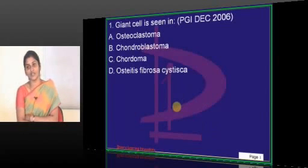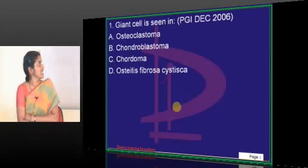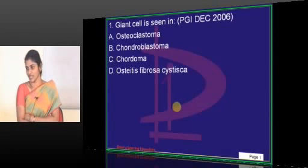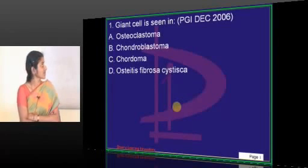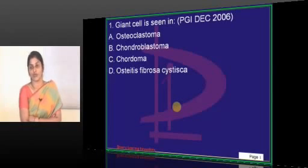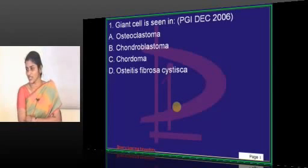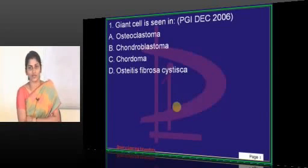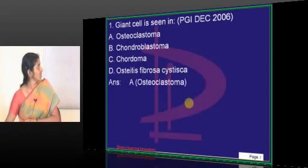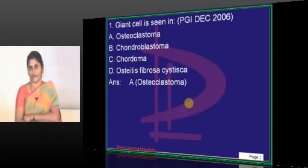This answer has been given wrongly in your textbooks. The question is: giant cells are seen in which lesion among the listed options? Osteoclastoma — will it have giant cells? What is the other name for osteoclastoma? Giant cell tumor. So it is straightforward. Chondroblastoma — the answer given was actually osteoclastoma, which is wrong.